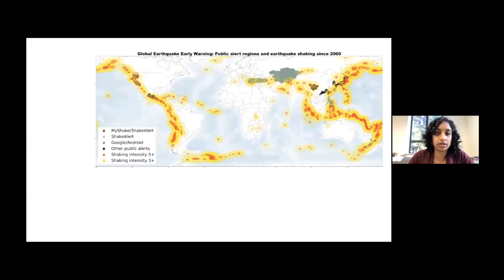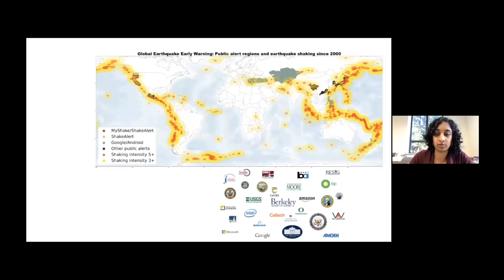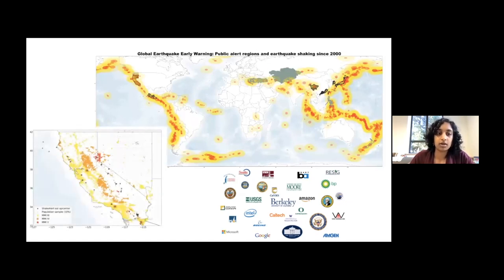Earthquake early warning is a global and growing concept with different iterations in various earthquake-prone parts of the world. Here in the US, about 20 years of collaborative development with Berkeley on the front lines led to the first release of public alerting through the ShakeAlert program in California in 2019. Since then, nearly the entire state has been the recipient of at least one alert, and Oregon and Washington have also begun issuing alerts earlier this year. Work is still ongoing to make the system more accurate and efficient.